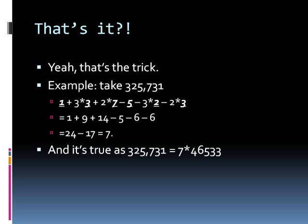I gave one example here for you guys. 325,731. I plug in the numbers into the formula. Again, I start with the ones digit, which is 1 in this case, and then I go upwards to the last digit, to the 3. So, I combine all my terms, I add them up, and I get a value of 7, which means that 325,731 is divisible by 7. And then here I show that it's actually 7 times 46,533.